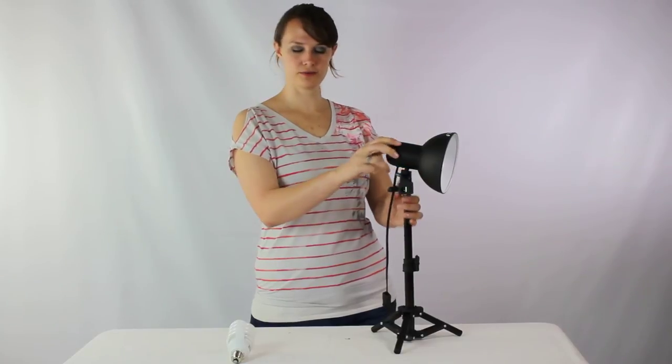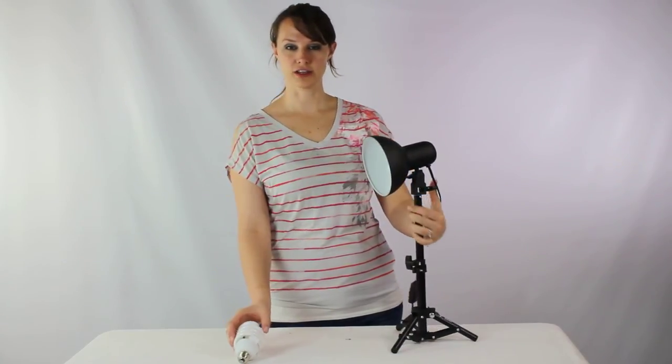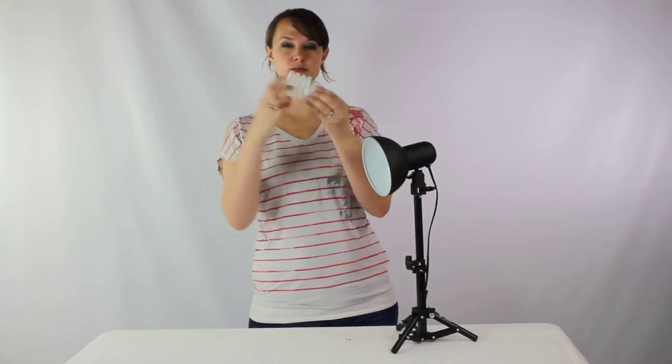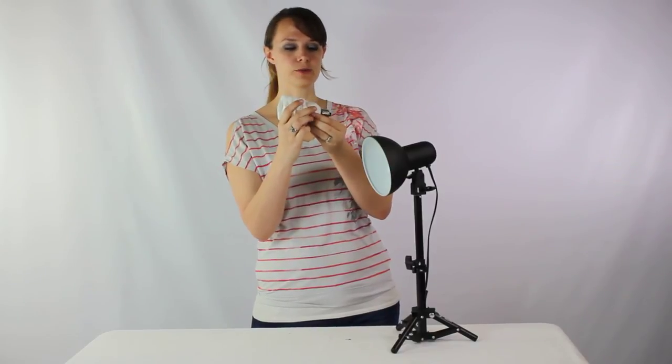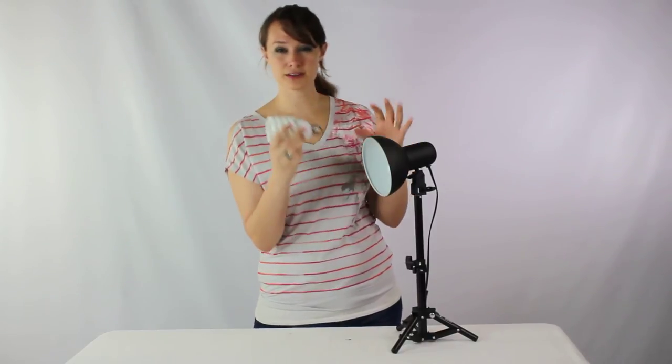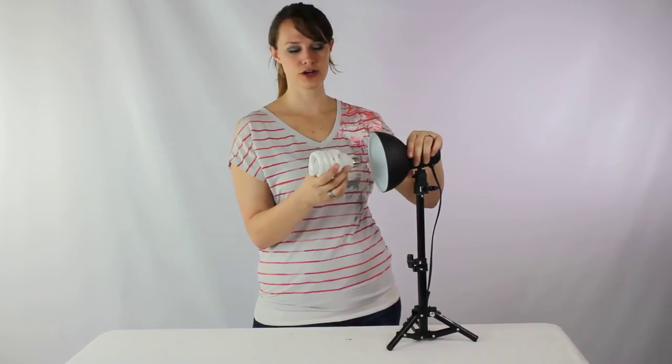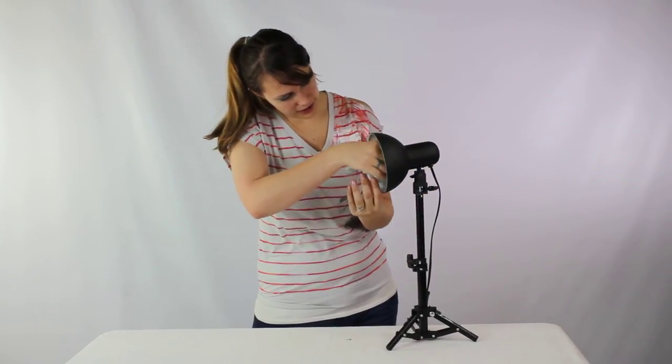Once you have this securely on here, you're going to attach the light bulb. Now try and avoid touching the spiral part and tightening with the spiral part as much as possible. In this kit, it's a little bit more difficult just because of size constraints, but it can be done. So go ahead and just slide it in there.